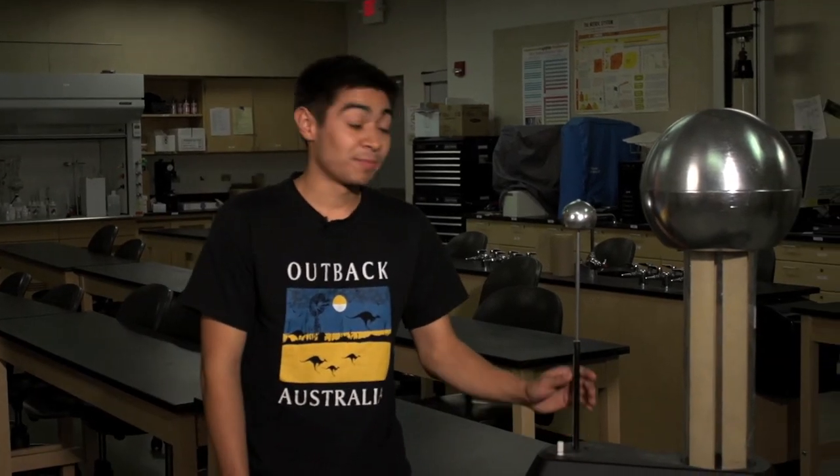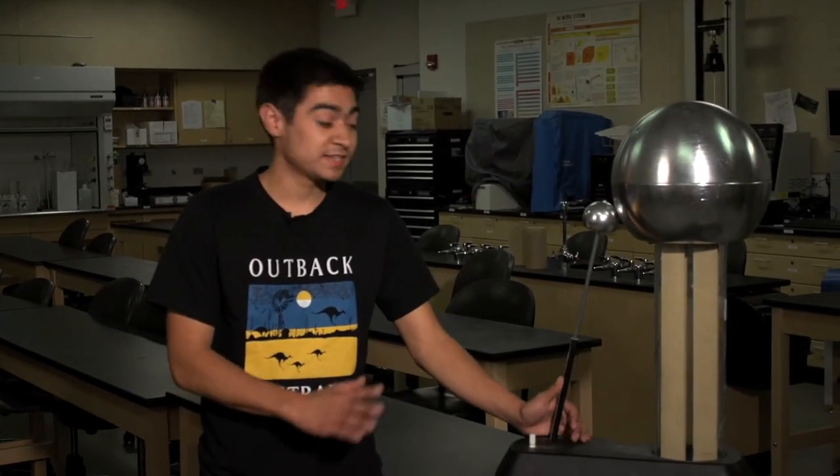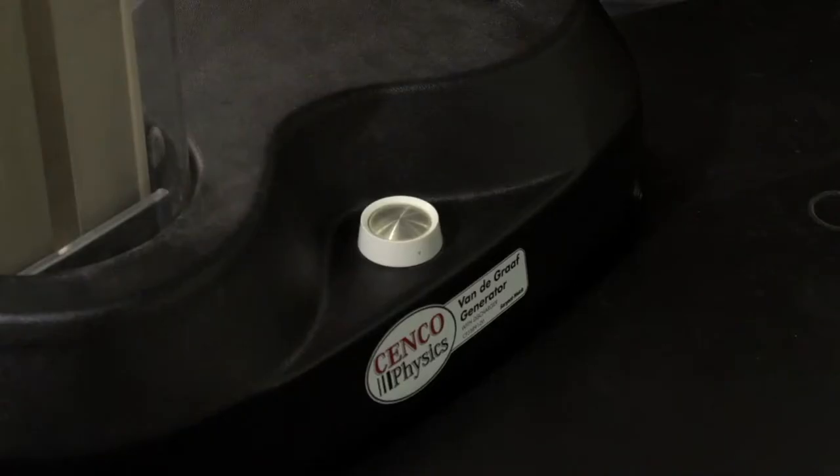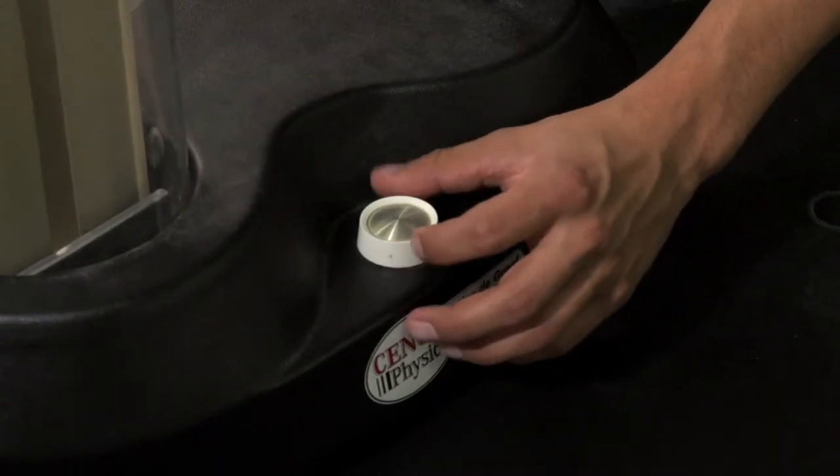Once you actually start to interact with the Van de Graaff, you want to make sure to always discharge any charge that's already on the dome through the grounding sphere first. Remember that the on-off switch starts at high and progressively gets lower, so as soon as you turn it on, you want to turn it all the way to the right.